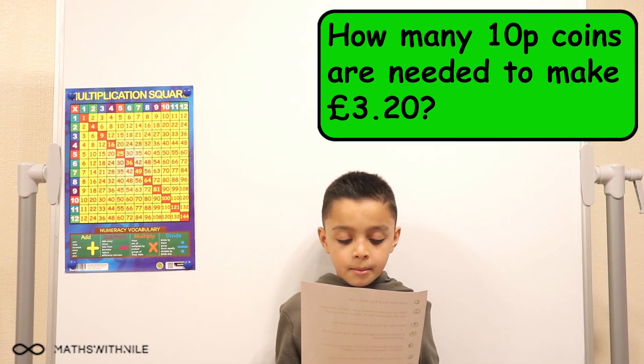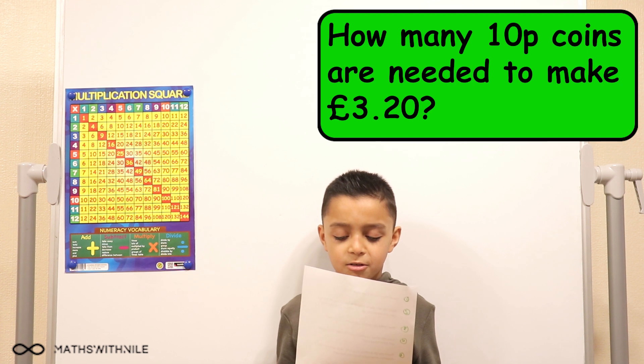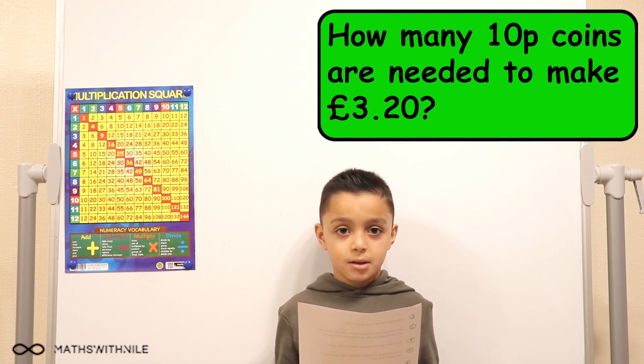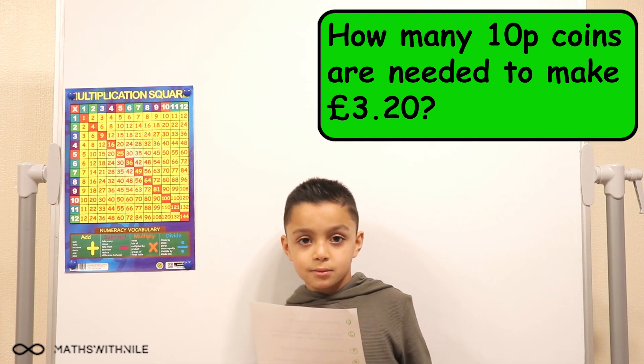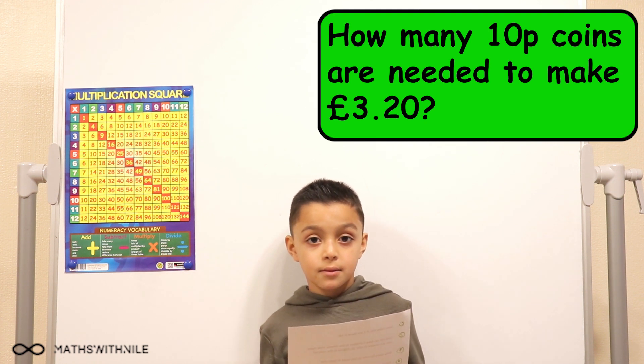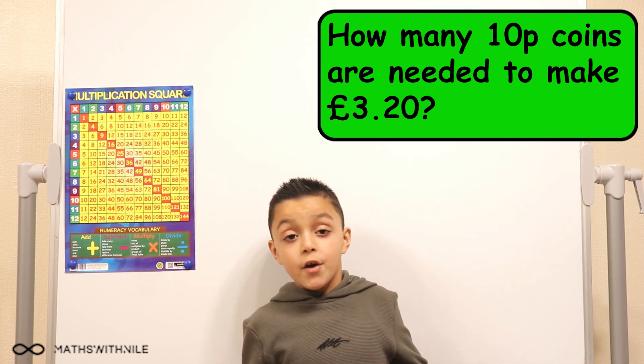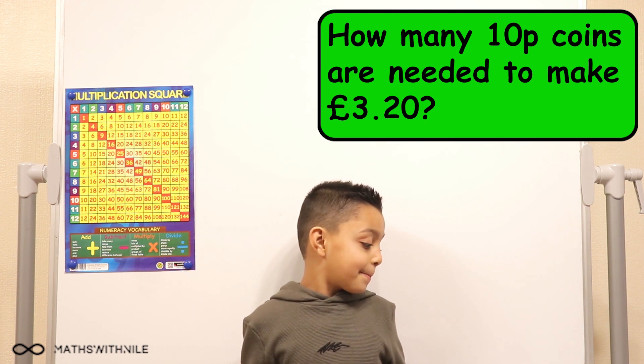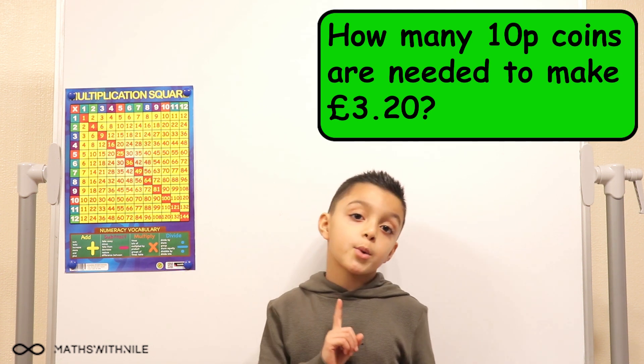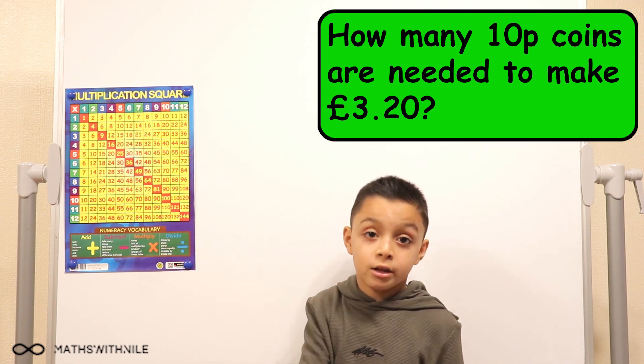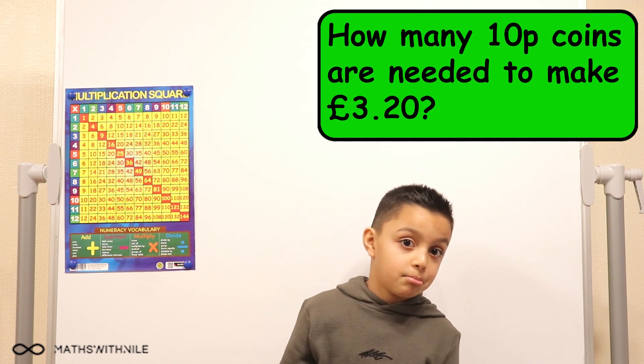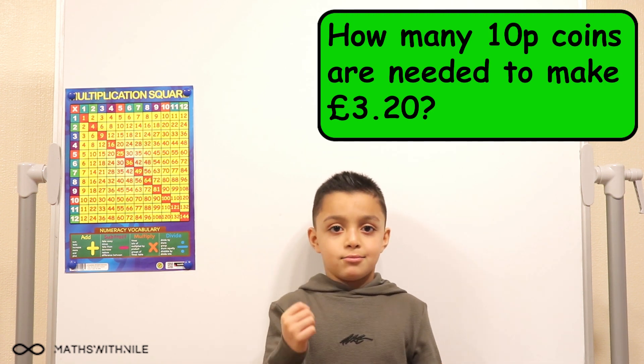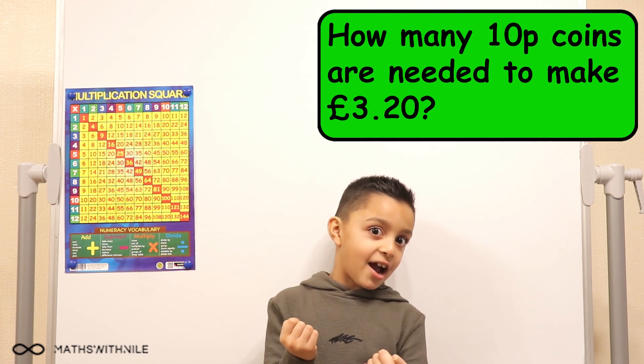How many 10p coins would be needed to make £3.20? So what's the method you're going to use? First, we have to see how many 10p coins would go into £1.00. So 100 pence. Okay. So how are you going to work that out? On my fingers. I think I have enough fingers.